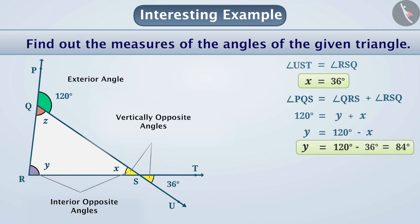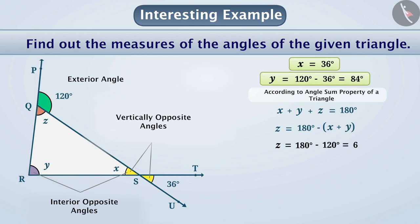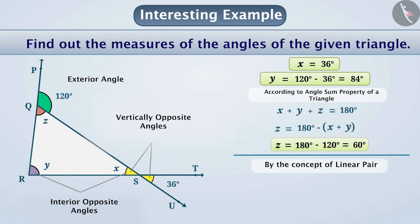We can find the value of z in different ways. According to the angle sum property of a triangle, x plus y plus z equals 180 degrees, which means z equals 180 degrees minus (x plus y) equals 180 degrees minus 120 degrees, which equals 60 degrees. Similarly, we can find z using the concept of linear pair: z plus angle PQS equals 180 degrees, so z equals 180 degrees minus 120 degrees, which equals 60 degrees.